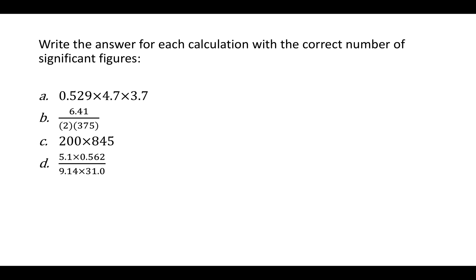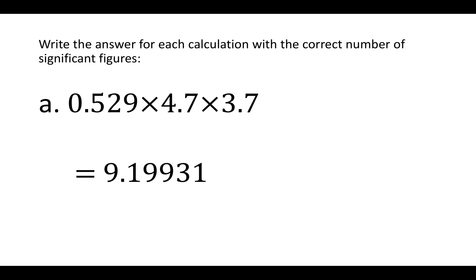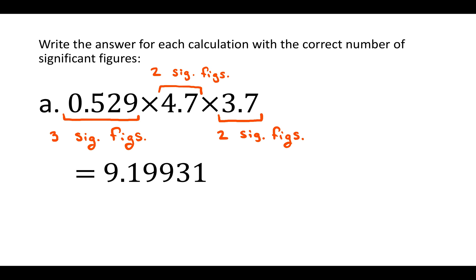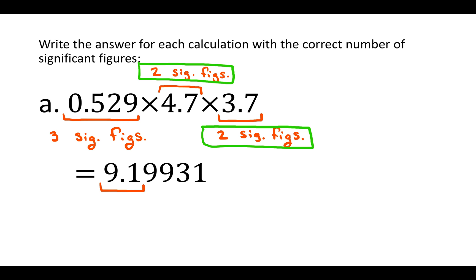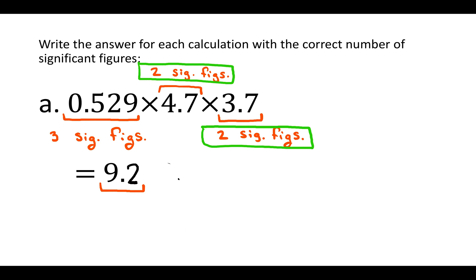This next question is very similar — write the answer for each calculation with the correct number of significant figures. First, just do the math; with these numbers that should give you 9.19931. Then go back to the numbers you multiplied or divided together. The first number has three significant figures — that zero is not significant, because zeros to the left of non-zero numbers are never significant. The second number has two significant figures, and the third number has two significant figures. The lowest number of significant figures is two, which is the measurement with the least precision, so that's how many sig figs we need in our answer. Going from left to right, we've got 9 and 1 — that's two sig figs. Everything else needs to be rounded away. Because that next digit, 9, is above 5, we round up, and our answer to the correct number of significant figures should be 9.2.